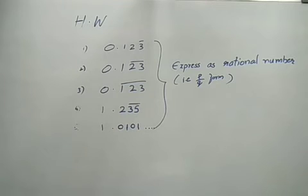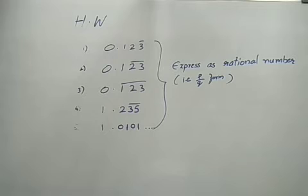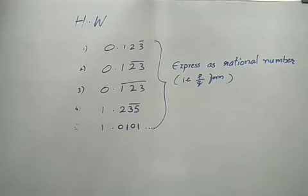The homework problems: first is 0.1̄23 (bar over 1), second is 0.12̄3 (bar over 2), third is 0.123̄ (total bar), fourth is 1.235̄, and fifth is 1.0101... continuing. Convert all these problems into P/Q form — express as rational numbers.